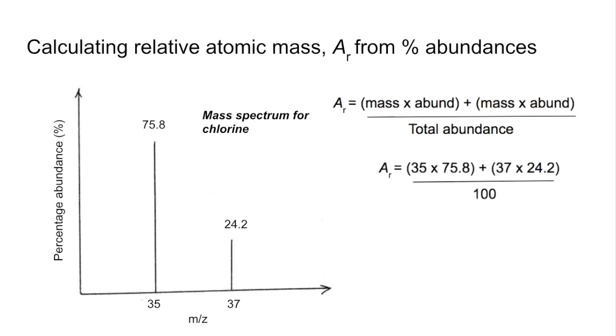So the numbers plug in like that, and the total abundance obviously because it's a percentage is 100, and that's coming out at about 35.5.